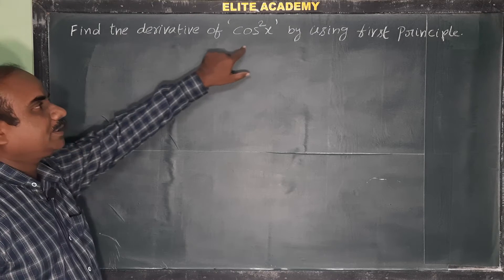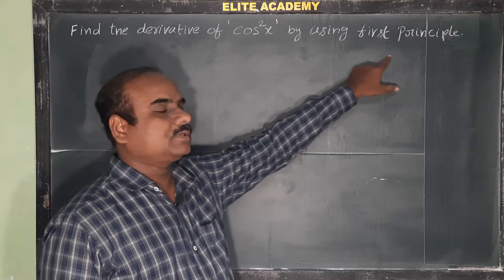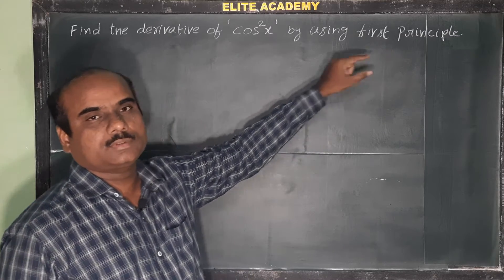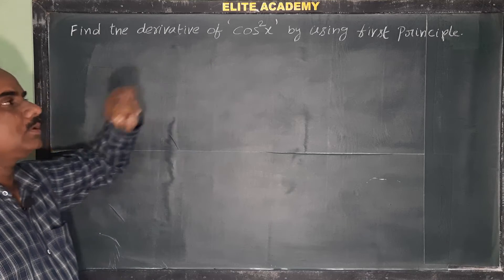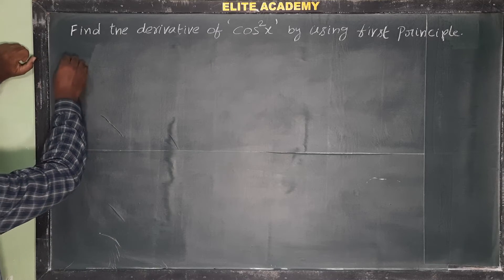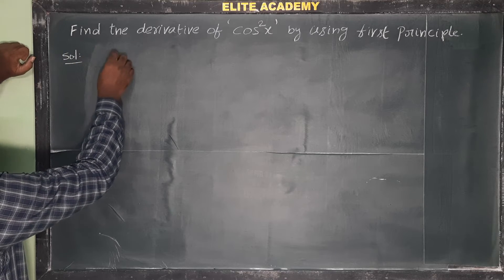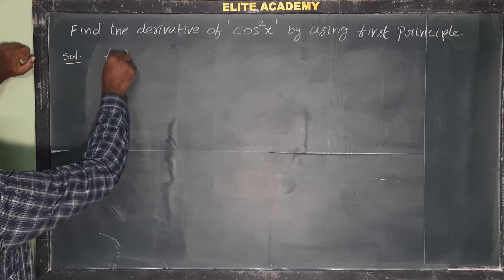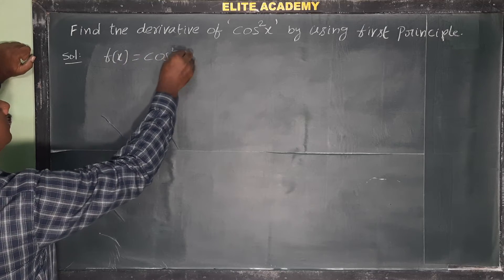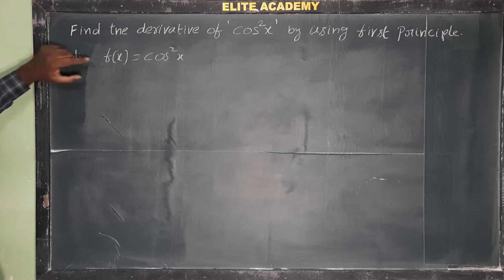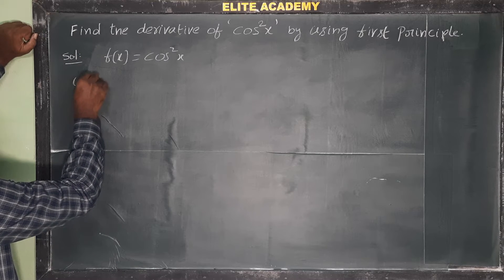Find the derivative of cos²x using the first principle. Using first principle, we need to find the derivative of the function cos²x. Let us see how to calculate this solution.